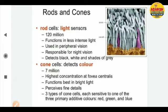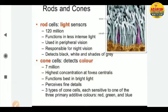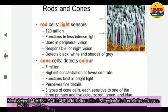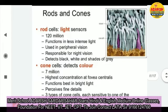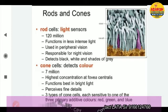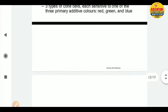The concentration of cone cells is highest at the fovea centralis. Cone cells function best in bright light, perceive fine details, and there are three types of cone cells, each sensitive to one of the three primary additive colors. So rod cells are active in dim light, and cone cells are active for seeing colors. The diagram here shows elongated rod cells in gray and cone-shaped cone cells in purple.